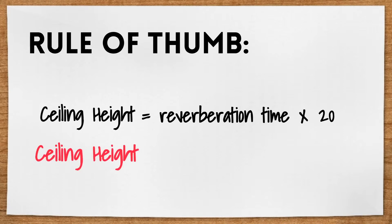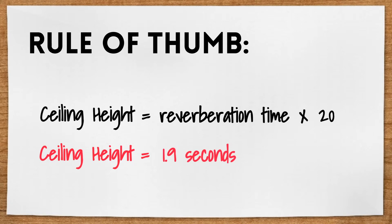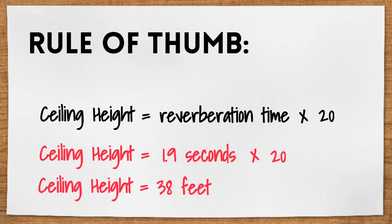So in this example, the concert hall needs a reverberation time of about 1.9 seconds. Using our quick rule of thumb equation, we can estimate that the ceiling should be approximately 38 feet high.